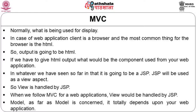Who will display it? What technology is used for displaying? In web applications, the client is a browser, and the most common thing for browsers is HTML. So the output is going to be HTML. If we have to give HTML output, the component used from our web application would be a JSP. JSP will be used as the view aspect — view is handled by JSP.